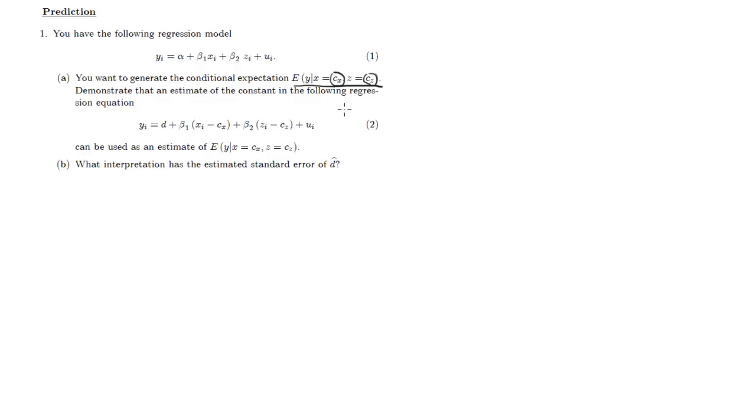Now demonstrate that an estimate of the constant in the following regression equation can be used as an estimate of this. So the constant is here. So basically what this question, we're going to start with question a, we're going to look at b later. So what this question suggests is that this d or an estimate d hat is the same as this, the expected value of y given x equals cx and z equals cz.